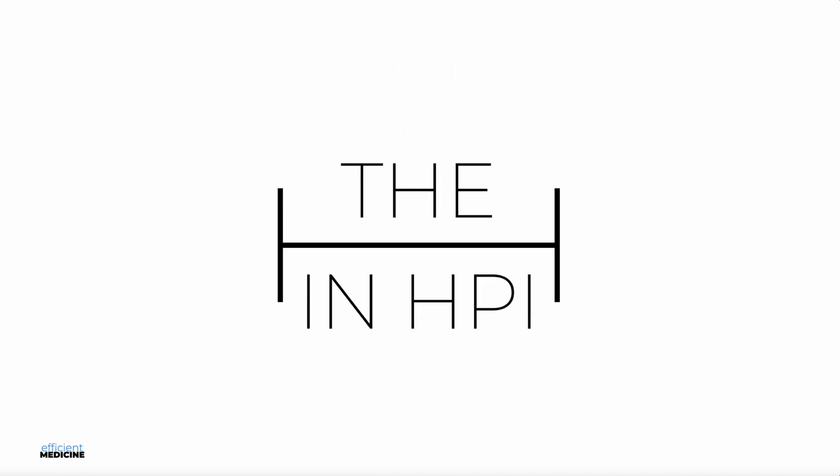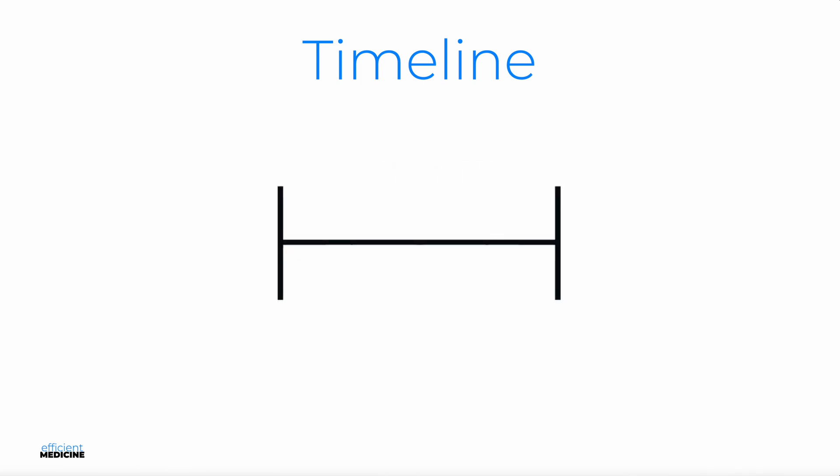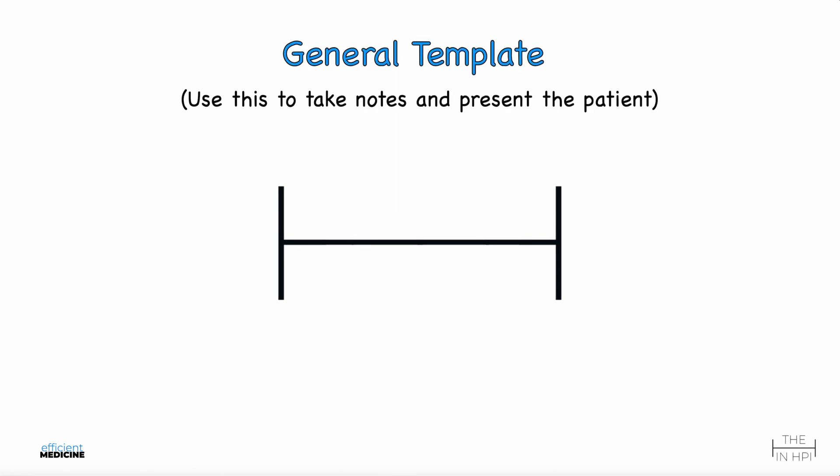Instead, let's use the H&HPI tool to go through the basics of obtaining a patient history. In the logo, we have a timeline. It's a modified timeline that we're going to use to take our notes and obtain the HPI. We're going to write our notes directly on this modified timeline.